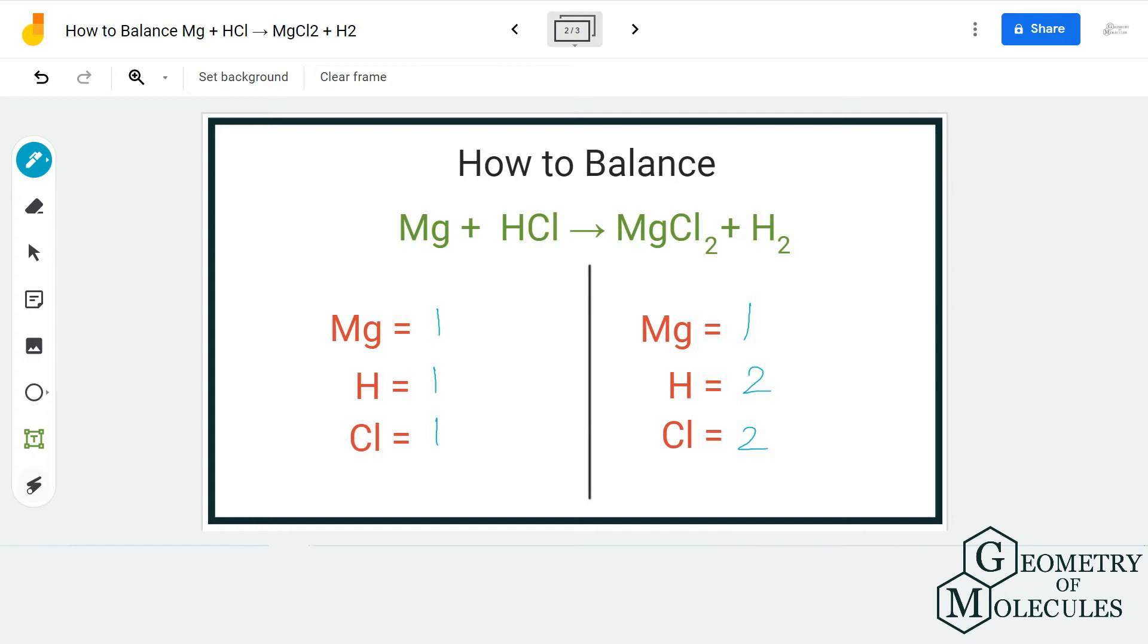To balance it off, we need to have two hydrogen atoms on the reactant side as well. So I'm going to add a coefficient of 2 before HCl. Doing that, I will have 1 times 2 equals 2 hydrogen atoms, and for Cl also I'll have 1 times 2 equals 2 chlorine atoms.